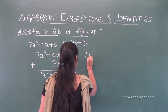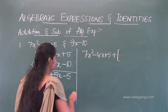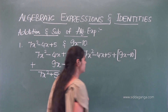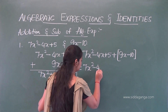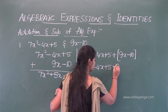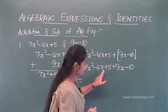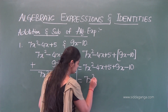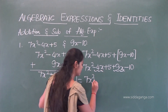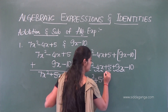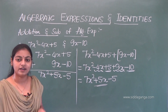Using the row method: 7x squared minus 4x plus 5 plus (9x minus 10). Removing the bracket: 7x squared minus 4x plus 5 plus 9x minus 10. Combining like terms: 7x squared has no like term, so it stays. Minus 4x plus 9x equals plus 5x. Plus 5 minus 10 equals minus 5. So the answer is 7x squared plus 5x minus 5.